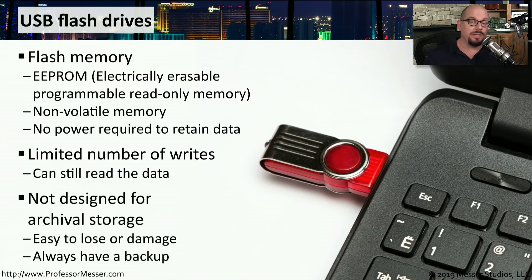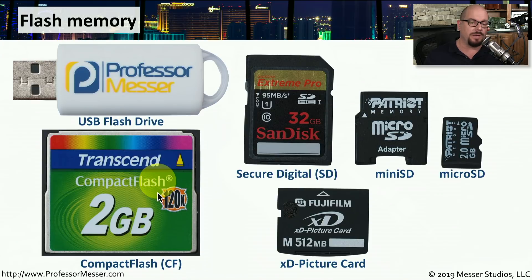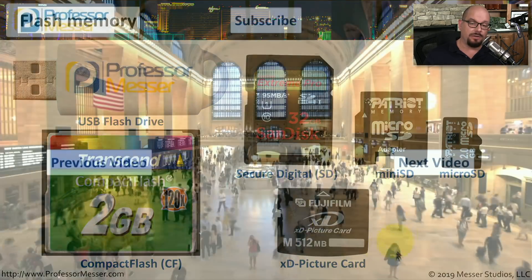For that reason and many others, flash drives are not really designed for archival storage. These drives are very small and easy to lose and damage, and because there are a limited number of write cycles, they don't make for a reliable form of backup. There are many different formats of flash memory. The USB flash drive gives perspective on the size of other drive types. Compact Flash is a type that has been around for quite some time. SD — Secure Digital — is another popular form, and there are smaller versions such as mini SD and micro SD that you might find in many mobile devices. If you have a digital camera, you may also be using the XD picture card.